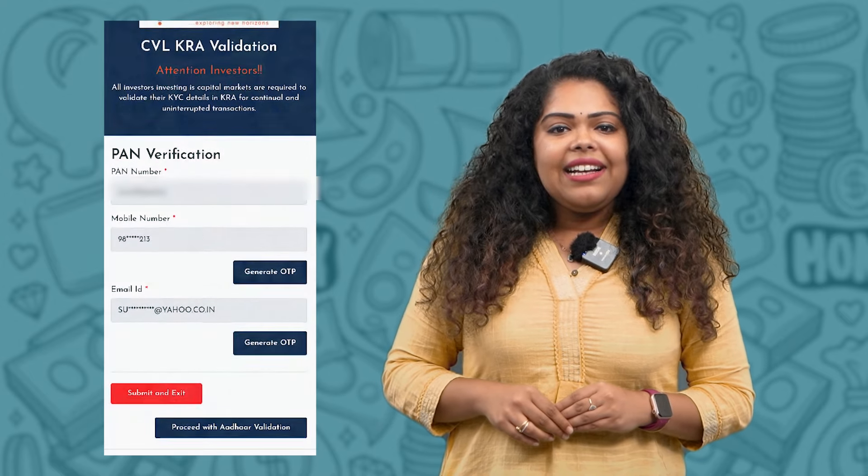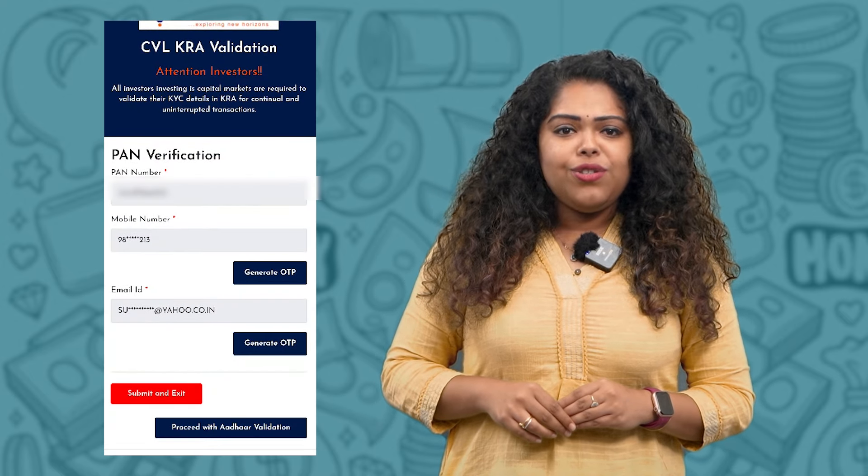There are 5 KRAs: CVLKRA, KaviKRA, NDMLKRA, .xKRA, and CAMPSKRA. Once you have identified the KRA, follow these steps to update your mobile number and email ID on the KRA website.